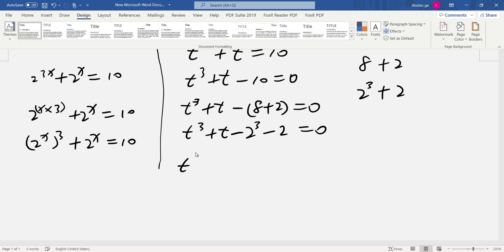t^3 - 2^3 + t - 2, then plus 2t minus 2 equals 0. So here we can open it. t factors to 2.